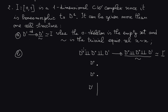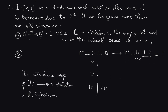Let's consider the following cell structure of the unit interval. We take as the zero-skeleton the disjoint union of two points, D0 here and D0 here, and we take one disk D1. So we have two points and, as a disjoint union, a unit disk. The attaching map goes from the boundary of D1 — which is a disjoint union of two points — to the zero-skeleton. It is a bijection, sending one point to one point and the other point to the other.